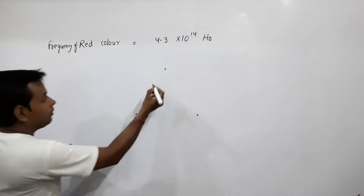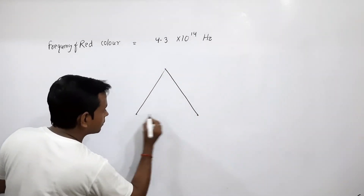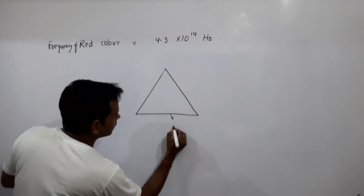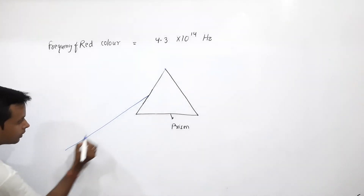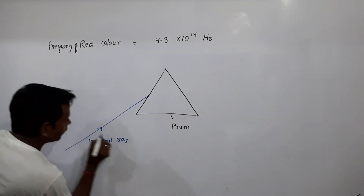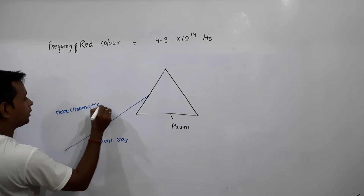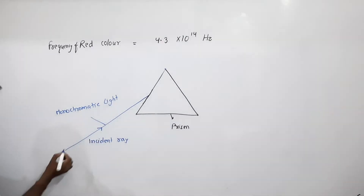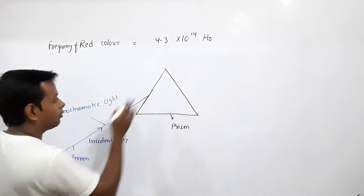If we pass any monochromatic light through a prism — let this incident ray represent a monochromatic light, say green — when this monochromatic light passes through the prism, it initially enters from a rarer medium, which is air, into a denser medium, which is glass.